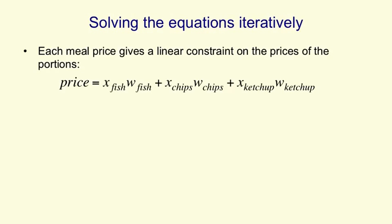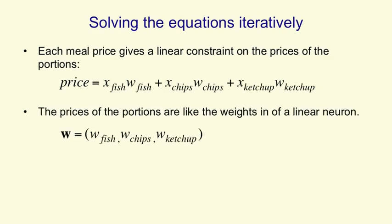It looks like this. The price of the whole meal is the number of portions of fish, x_fish, times the cost of a portion of fish, w_fish, and the same for chips and ketchup. So the prices of the portions are like the weights of a linear neuron, and we can think of the whole weight vector as being the price of a portion of fish, the price of a portion of chips, and the price of a portion of ketchup.